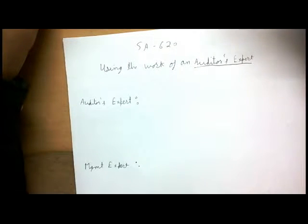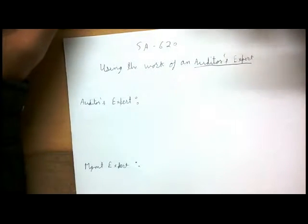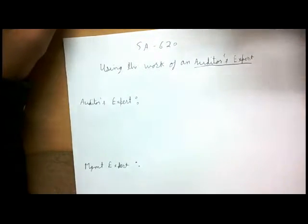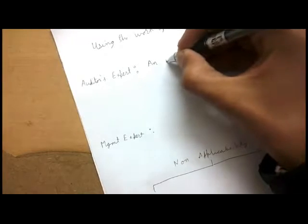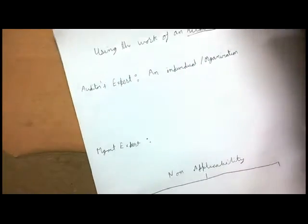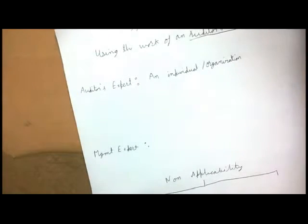An auditor's expert can be an internal expert or an external expert. An internal expert is one who is part of the auditor's engagement team, while an external expert is not part of the engagement team and the auditor has less control over the external expert's rules, regulations, and policies. The definition of an auditor's expert includes that he may be an individual or an organization.